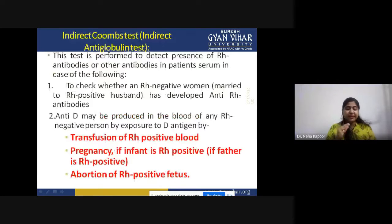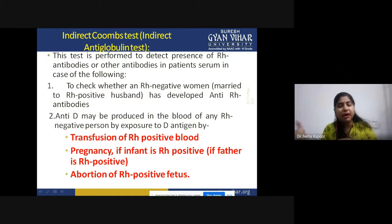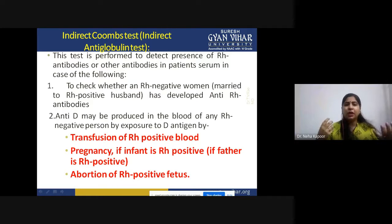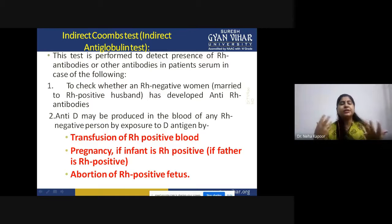This is used to detect the presence of Rh-negative antibodies or other antibodies in the patient's serum. For example, if you want to check whether a Rh-negative woman who is married to a Rh-positive man has developed some anti-Rh antibodies. Antibodies may also be produced in the blood of any Rh-negative person via exposure through blood transfusion — if Rh-positive blood is transfused into a Rh-negative person, antibodies develop. This may happen in transfusion reactions or in pregnancy if the fetus is Rh-positive but the mother is Rh-negative.